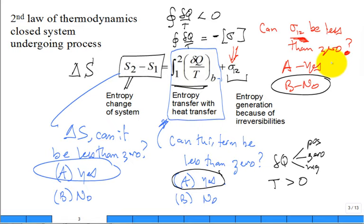The only term restricted to be greater than or equal to zero is entropy generation — the sigma term.